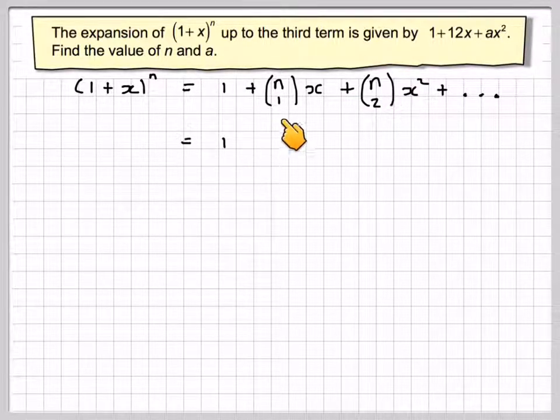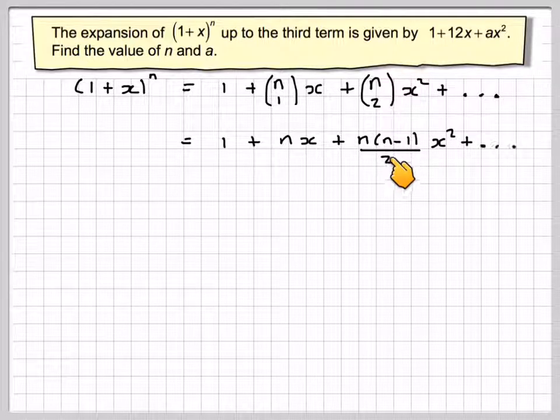We know that this first term is 1. Now, we know that nC1 is going to be n·x, and nC2 is going to be n(n-1)/2 · x².